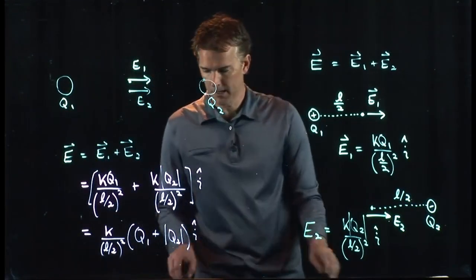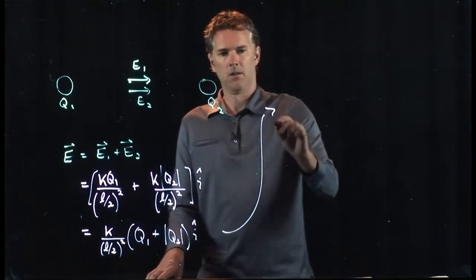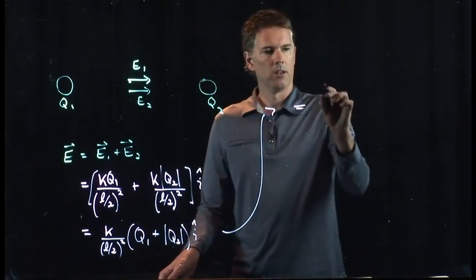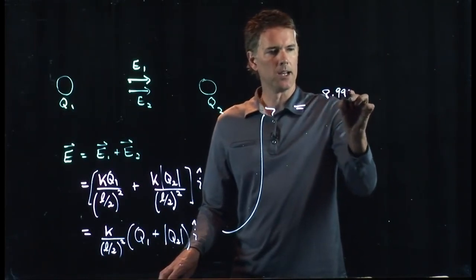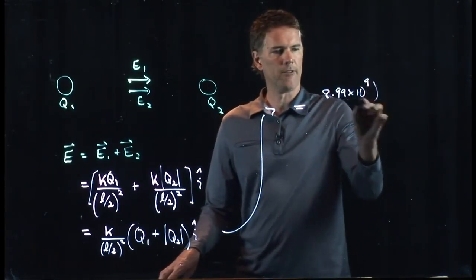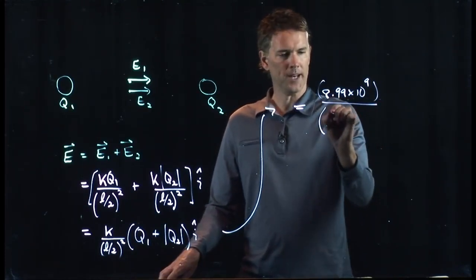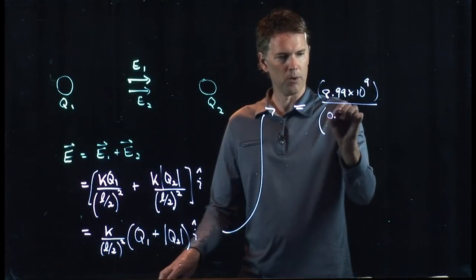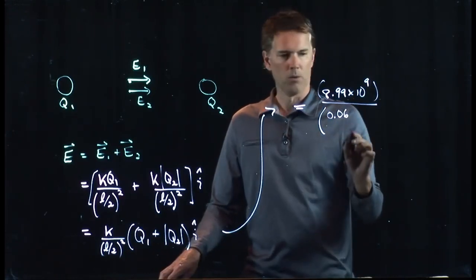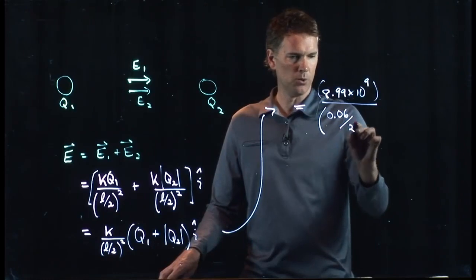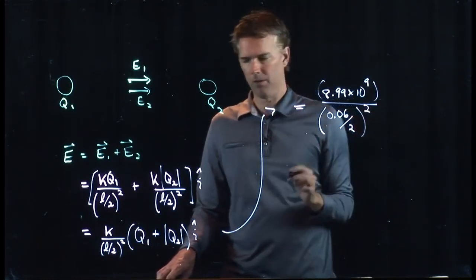And now let's put in those numbers and see what we get. Well, K is 8.99 times 10 to the 9. What did we have for L? Six centimeters. So in SI units, that's 0.06. We're going to divide that by 2, and then we're going to square the whole thing.